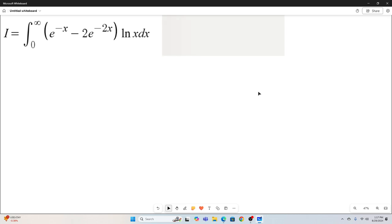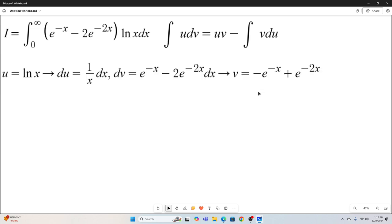The first step is going to be familiar. We're going to invoke the integration by parts formula. We'll let U equal natural log x, meaning that our du is 1 over x dx. We'll let our dv equal the rest, which is e to the negative x minus 2e to the negative 2x and a dx. So that's our dv, which means our v is negative e to the negative x plus e to the negative 2x.